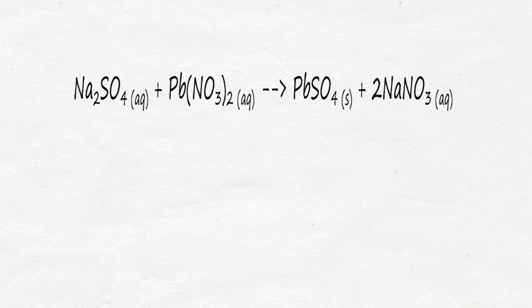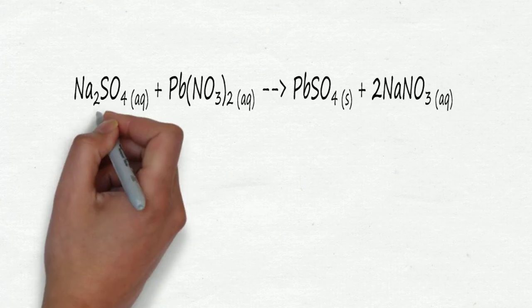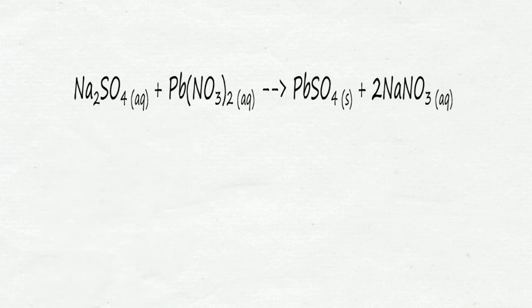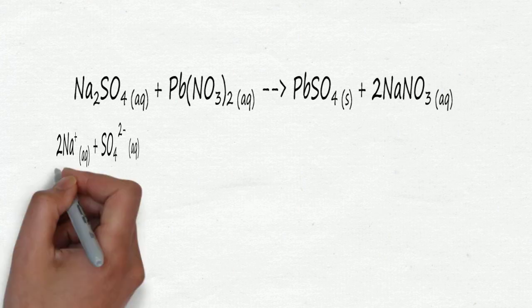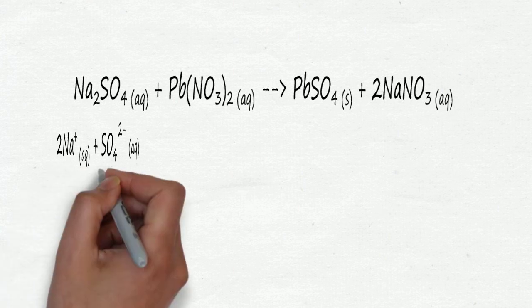For sodium sulfate, we separate it into ions since it is in the AQ state. Notice that there is a 2 in the formula. This means there are 2 sodium ions and 1 sulfate ion.